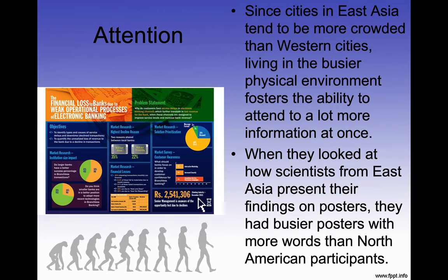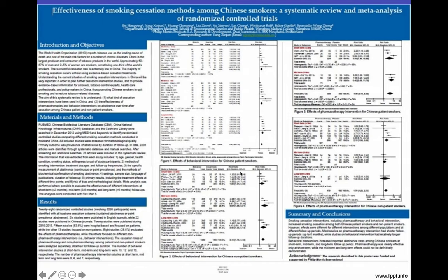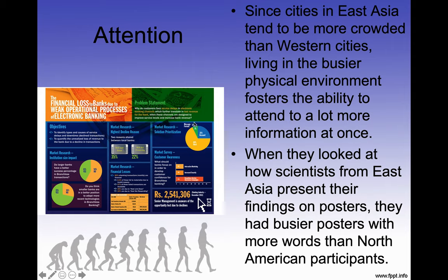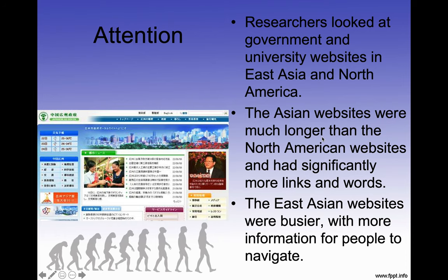Since cities in East Asia tend to be more crowded than Western cities, living in a busier physical environment fosters the ability to attend to more information at once. When researchers looked at how scientists from East Asia present their findings on posters, they had busier posters with more words than North American participants. Similarly, researchers found that Asian government and university websites were much longer than North American websites, with significantly more links and words — the East Asian websites were busier with more information to navigate.